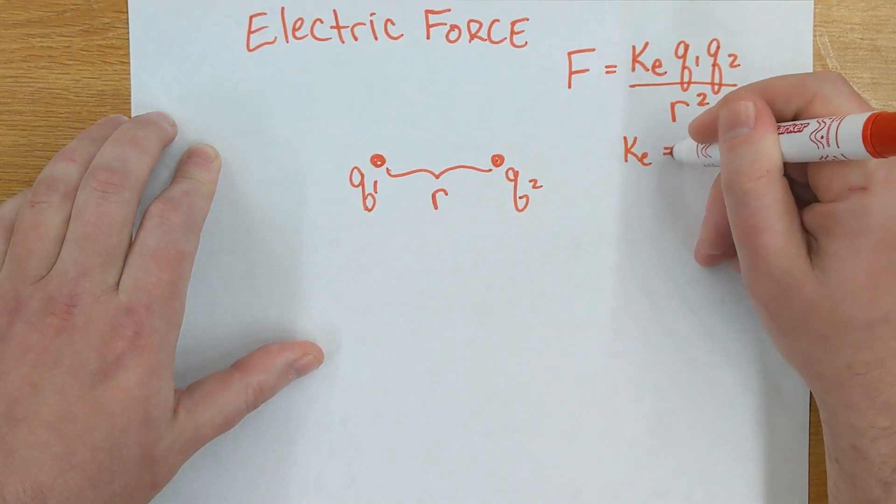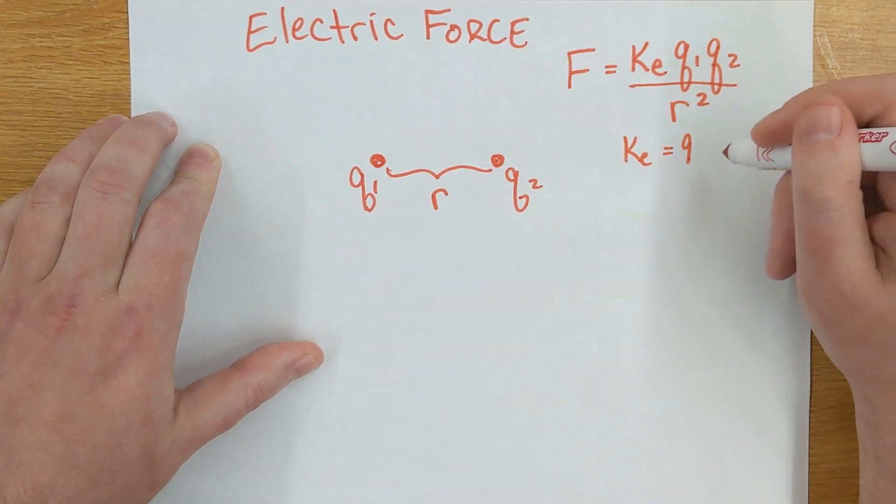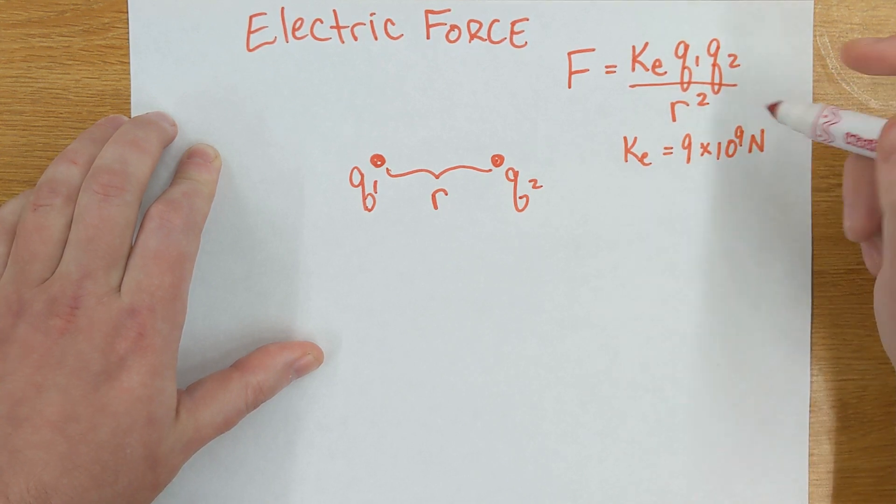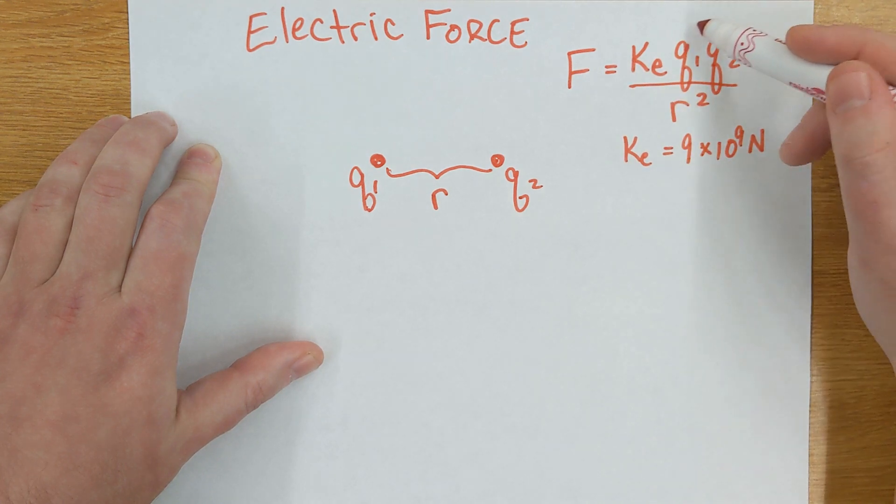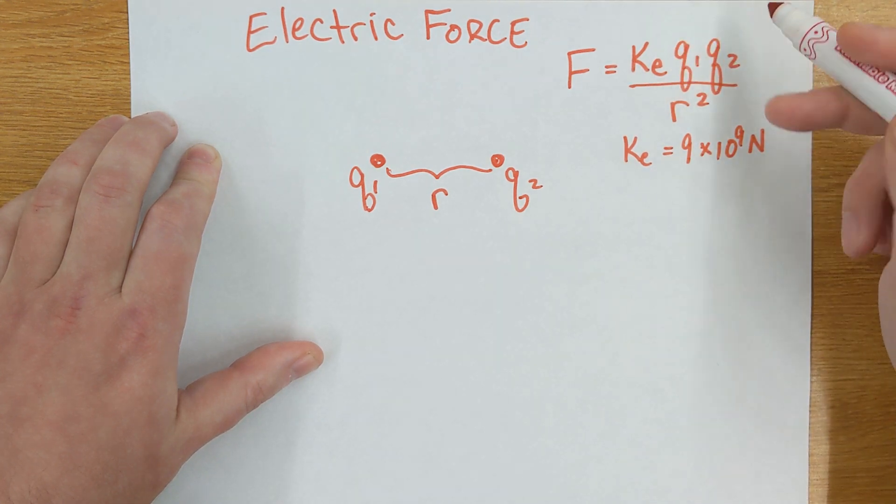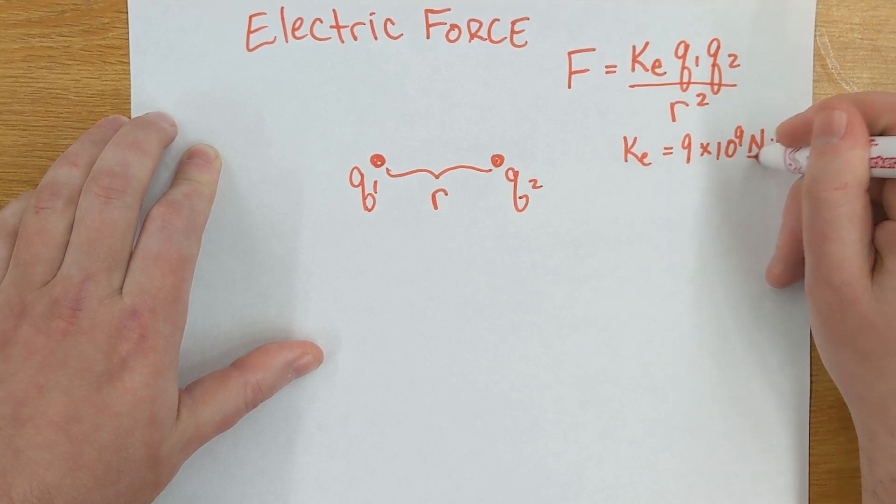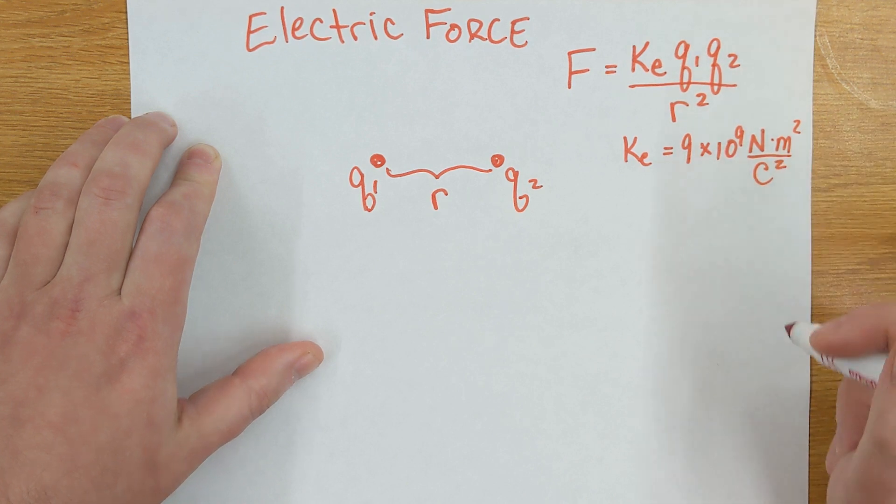And that constant ke is a pretty big number. It's 9 billion. It's 9 times 10 to the 9. The units are newtons, since I want to end up with a force. And I'm multiplying by Coulomb squared, so I'll have to divide by that. And I'm dividing by meters squared, so I have to multiply by that. So newton meters squared per Coulomb squared.